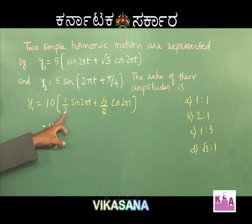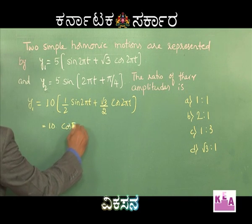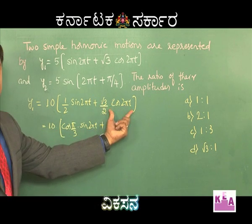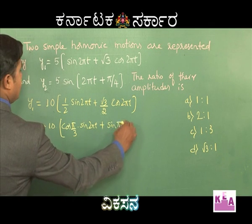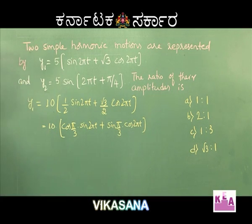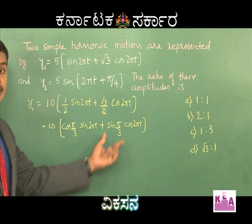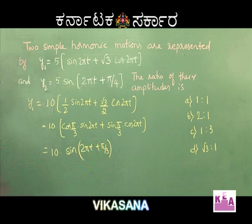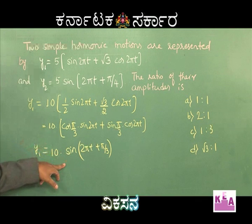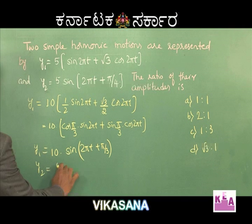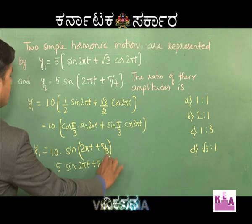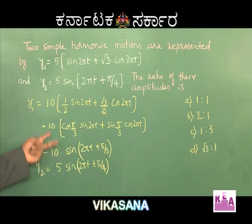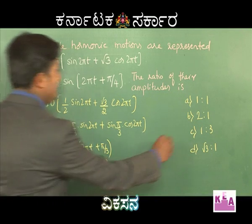This is 10 times [cos(pi/3) sin 2pi t + sin(pi/3) cos 2pi t], which is the form sin A cos B + cos A sin B. So this equals 10 sin(2pi t + pi/3). Y1 is now in standard form with amplitude 10. Y2 is already in standard form: y2 = 5 sin(2pi t + pi/4) with amplitude 5. Therefore the ratio A1:A2 = 10:5 = 2:1, so option B is the correct answer.